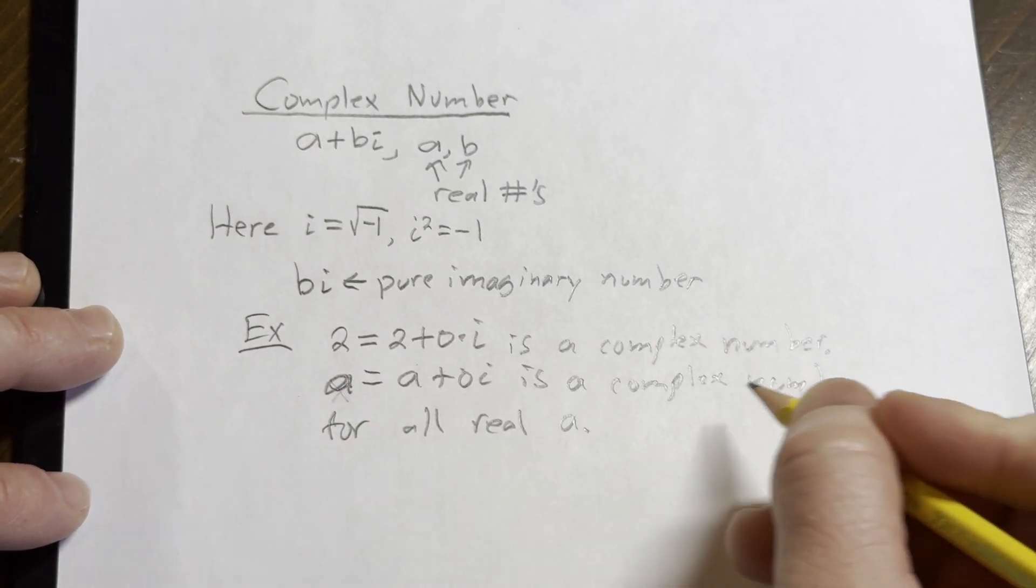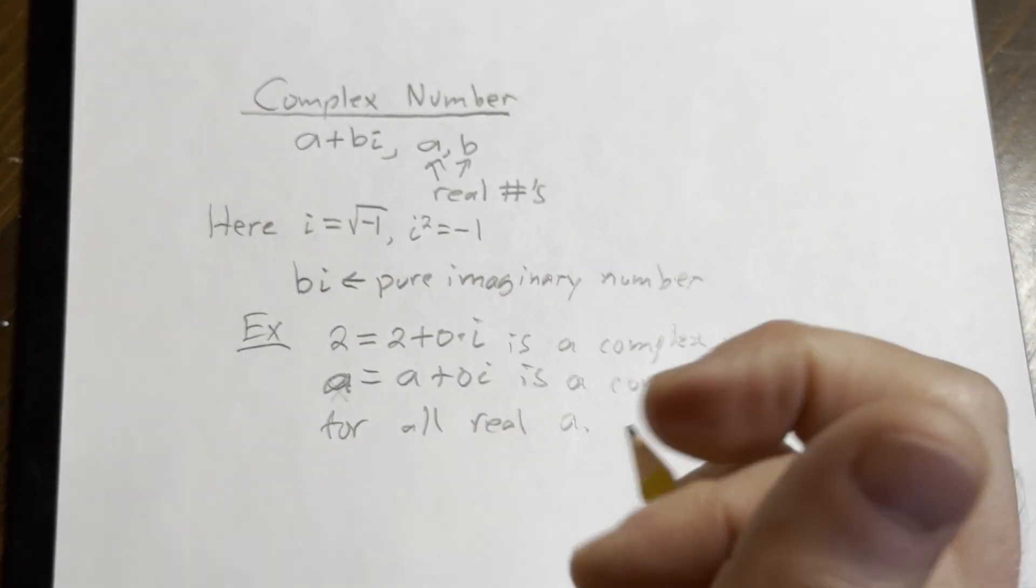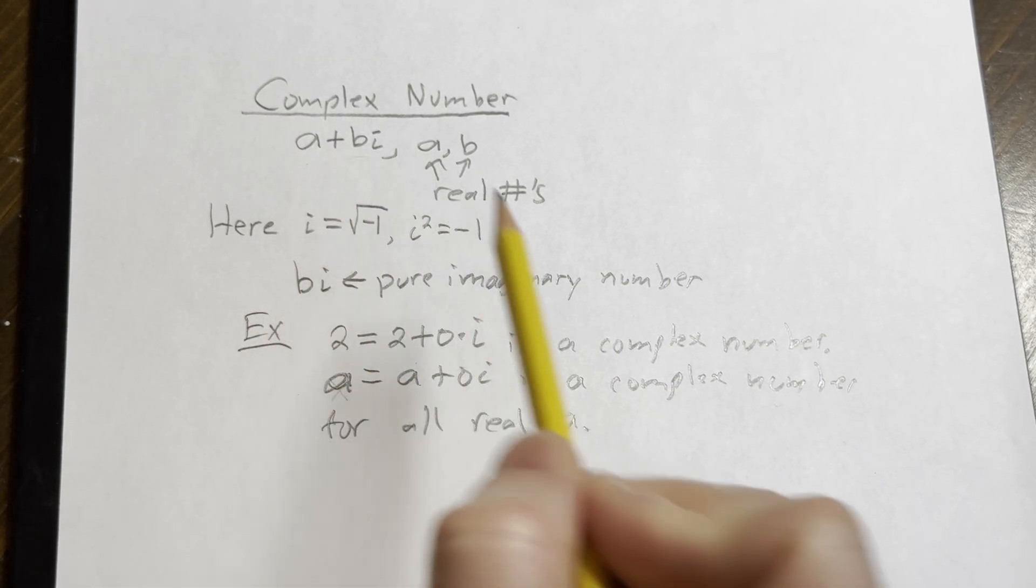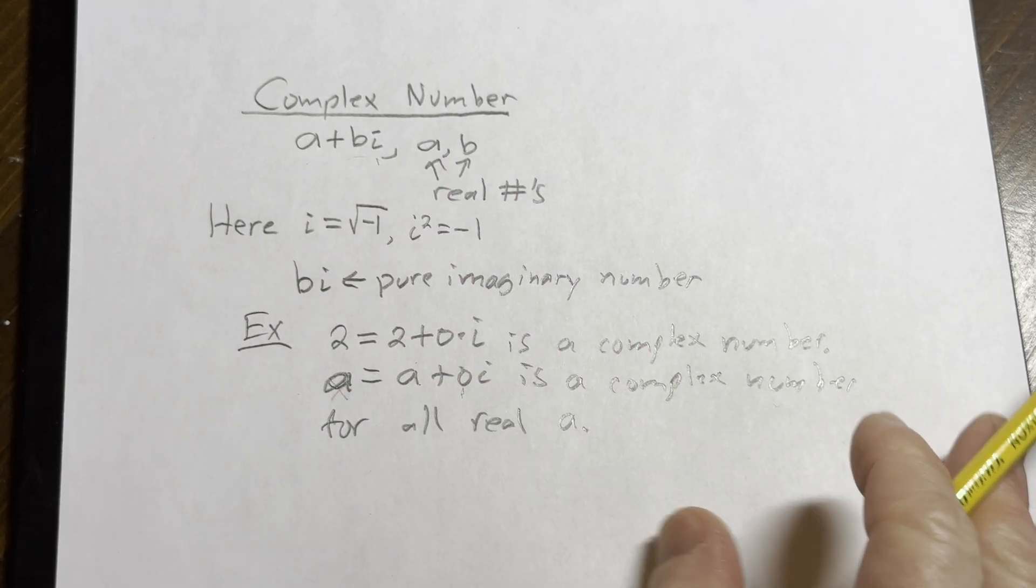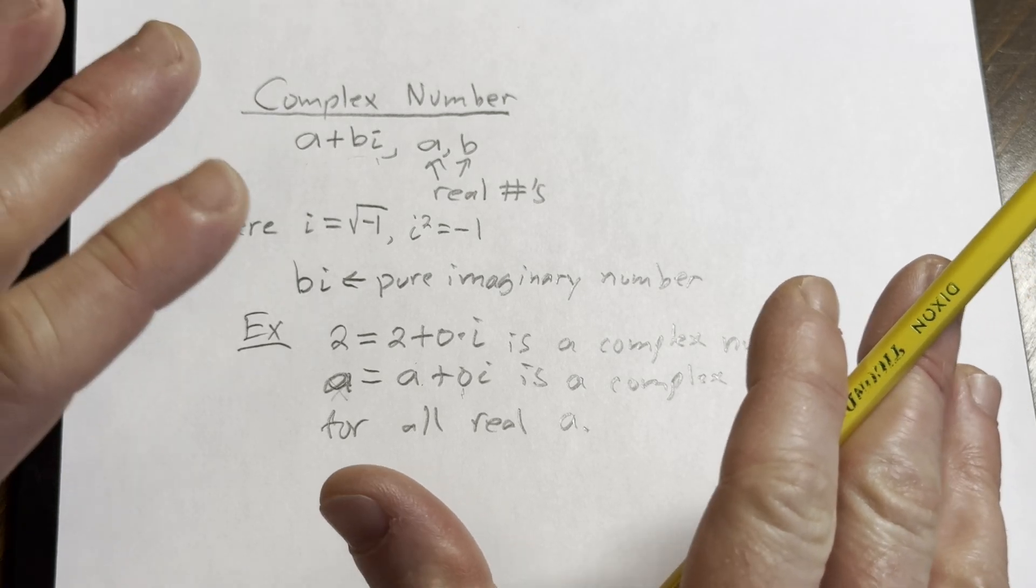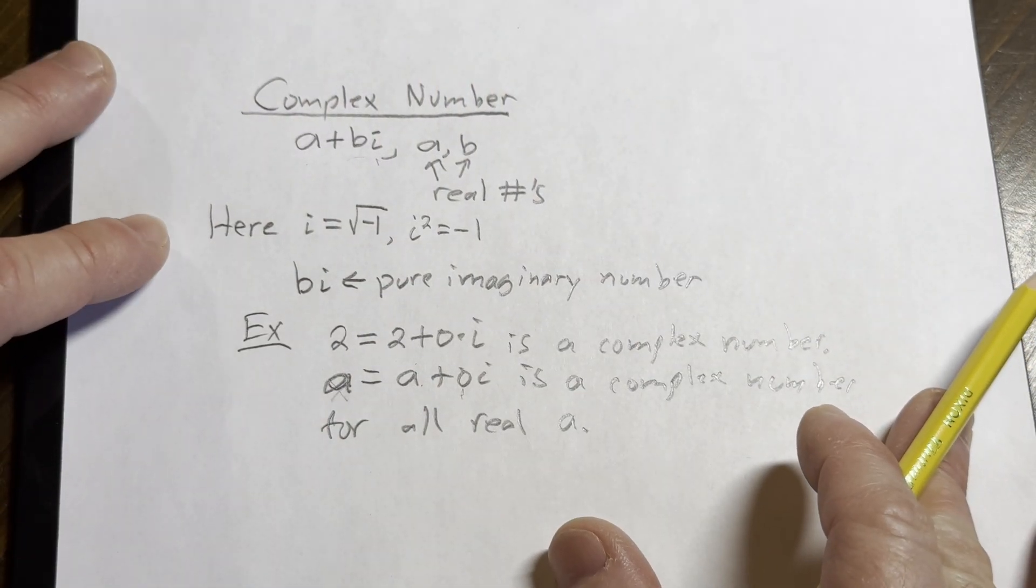And that's basically the proof that every real number is also a complex number. We've taken a real number a and written it in the form a plus bi, where b equals 0. So all the real numbers are already complex numbers. It's an extension of the real numbers.